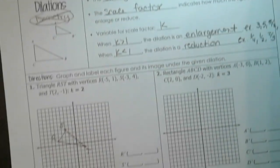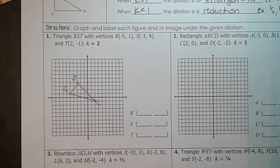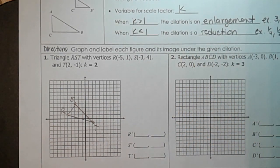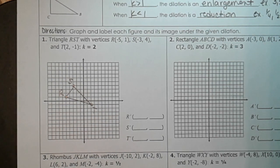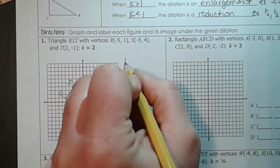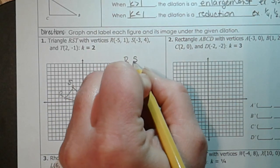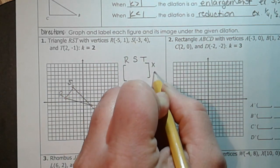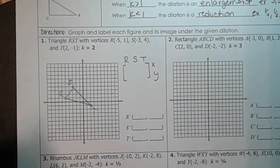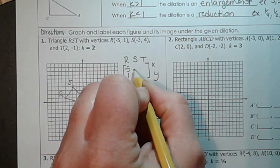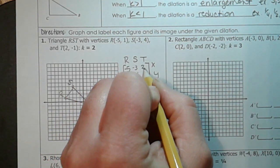So let's take a look at some examples. Here's a triangle, and we're going to do a k factor of 2, a scale factor of 2, which means it's going to be an enlargement. Remember you can write a shape as a matrix. Every column represents one of the vertices or one of the points on the shape, and then the top row is the x values and the bottom row is the y values. So r is at negative 5, 1, s is at negative 3, 4, and t is at 2, negative 1.